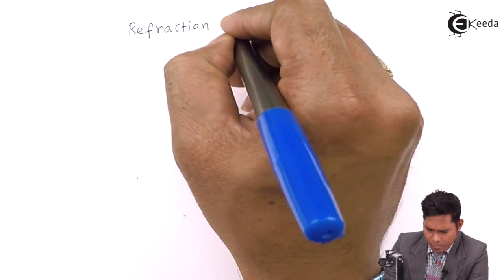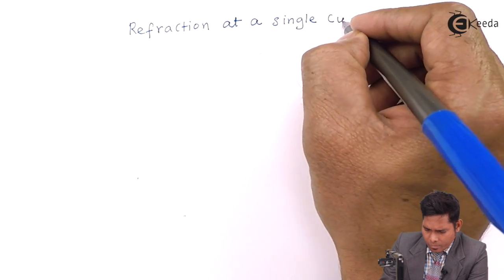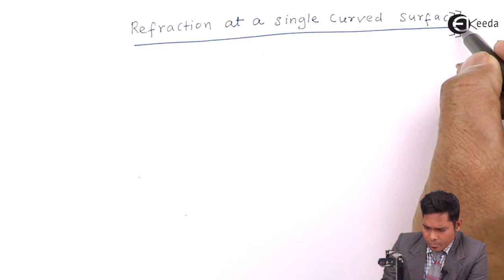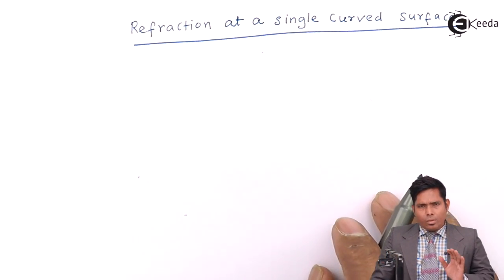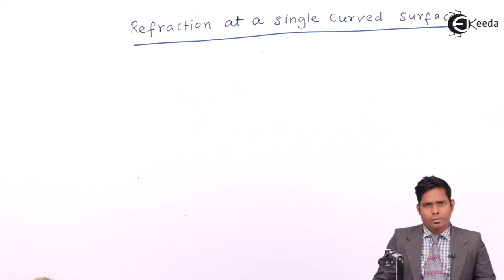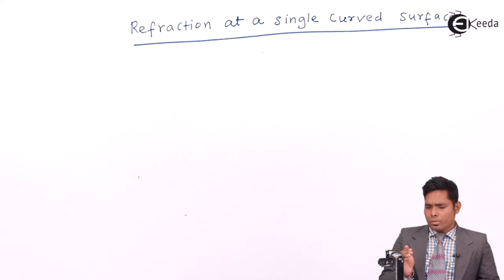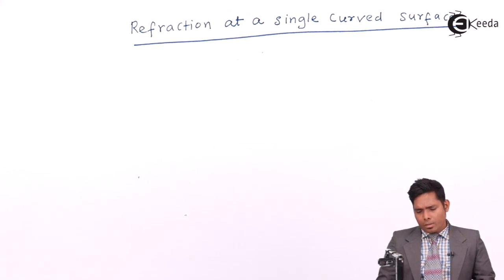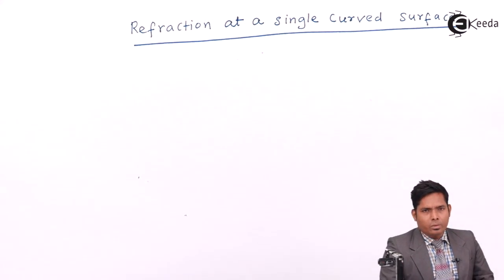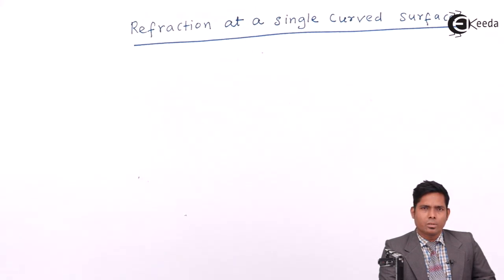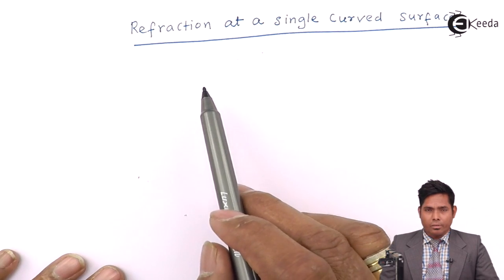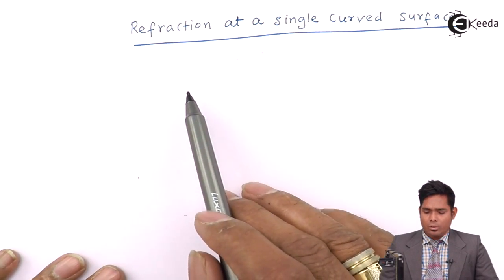Hello students, today we will discuss refraction at a single curved surface. We can have a surface which is a plane, or a surface which is curved. Here we are talking about a single curved surface, which can be concave or convex. What we are going to find out is the relations between the refractive indices, the radius of curvature, and the object and image distance.